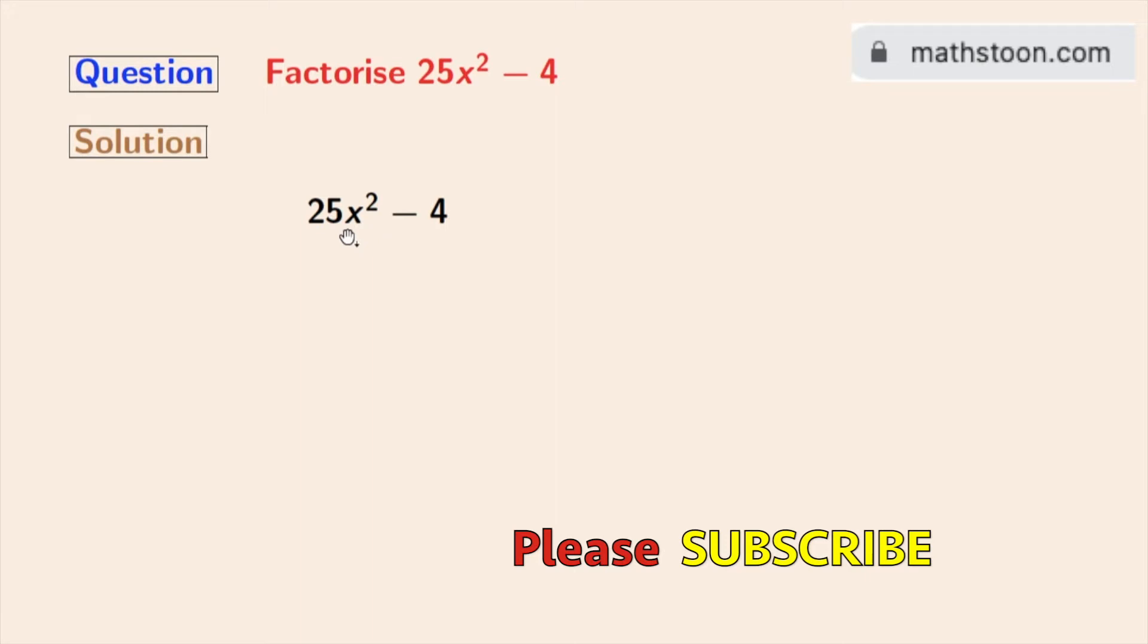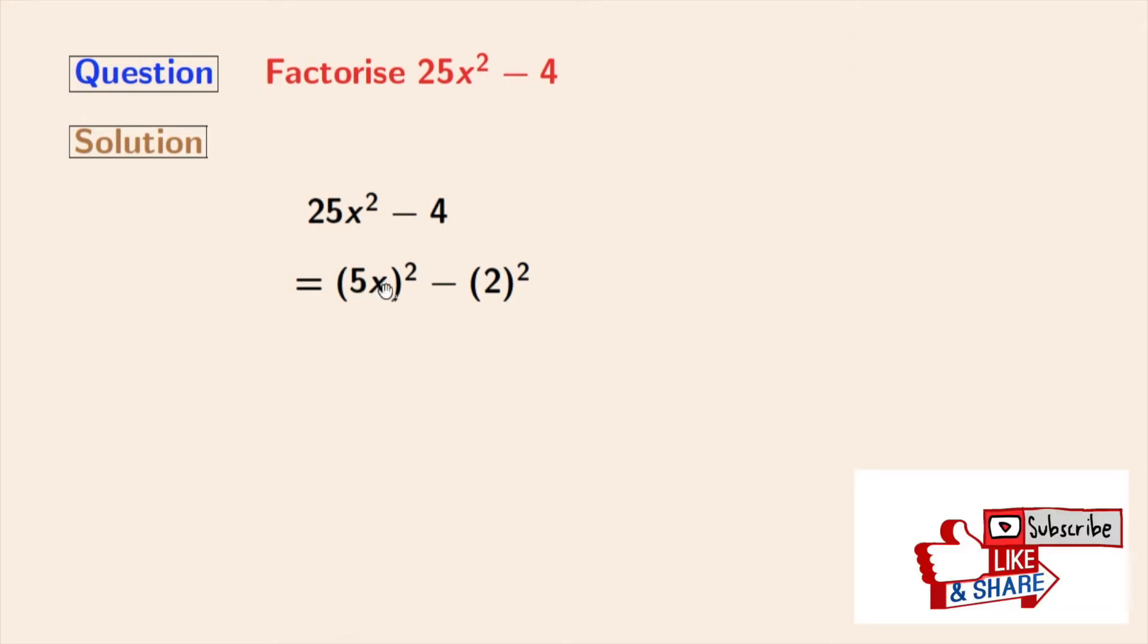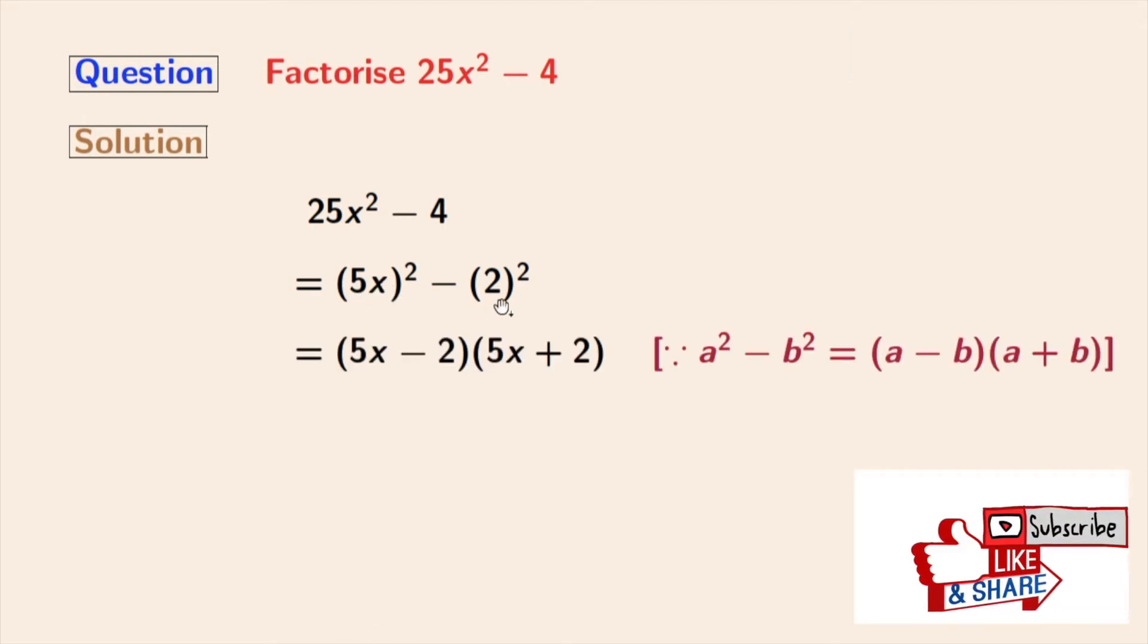Doing so, we get (5x)² - (2)². Now look that this is in the form of a² - b², where a is 5x and b is 2. So we can now apply the formula of a² - b² in this expression.